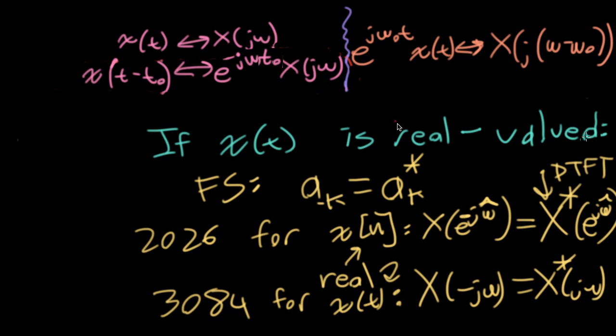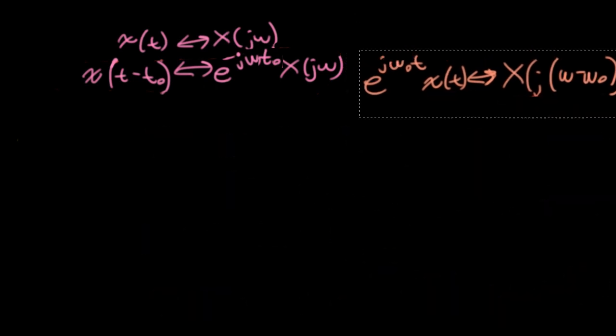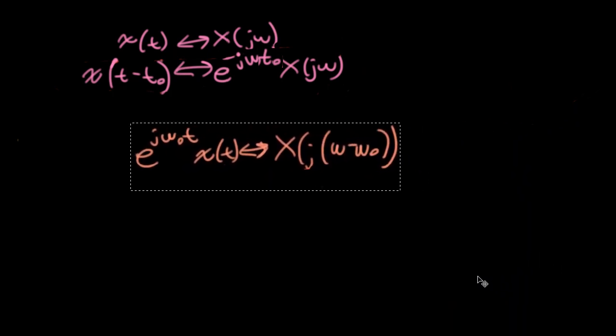except now for the continuous time Fourier transform. But in this particular case, this is probably not going to be real valued, right? Because this guy is complex. So this big X does not have that kind of symmetry, unless you had some kind of strange little x(t).